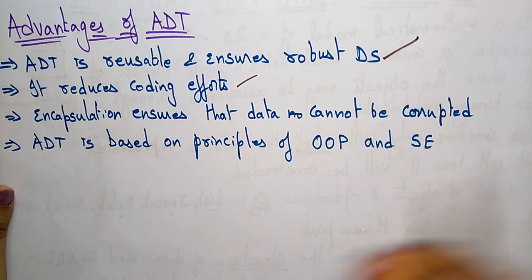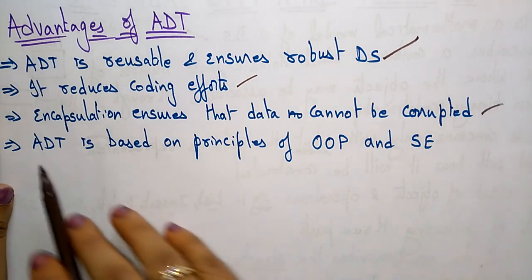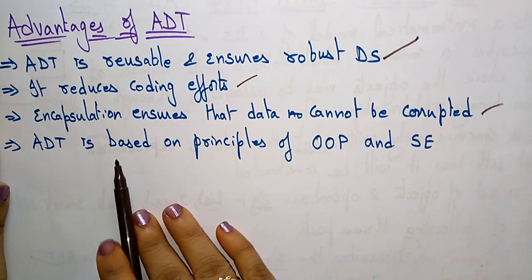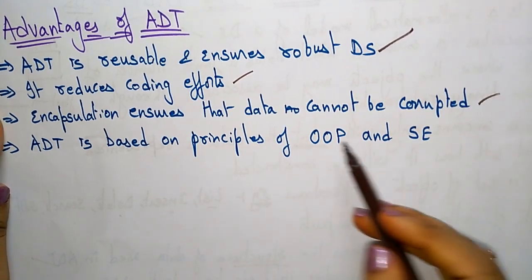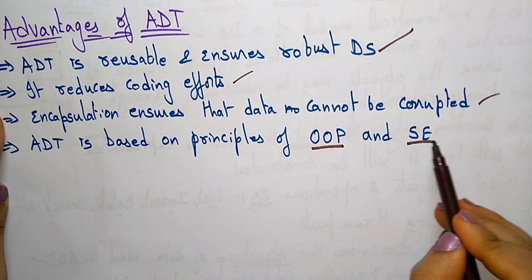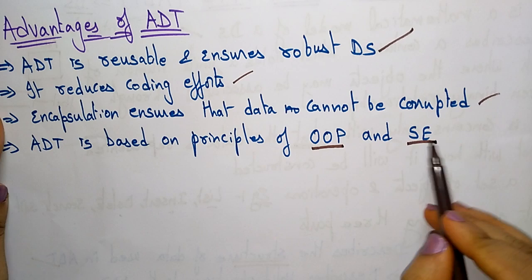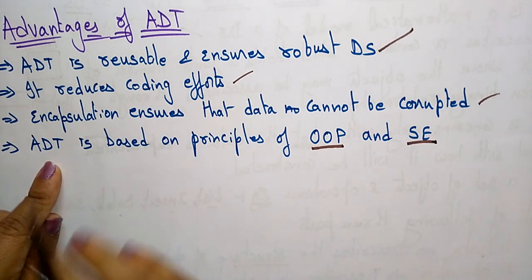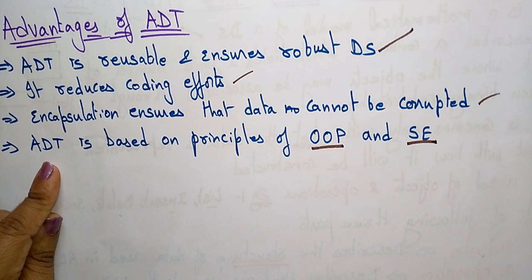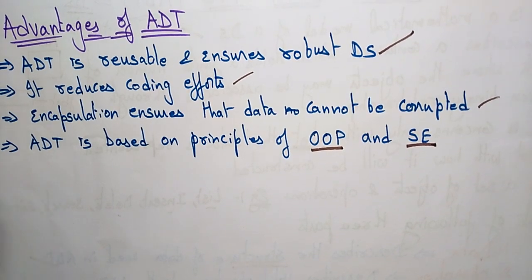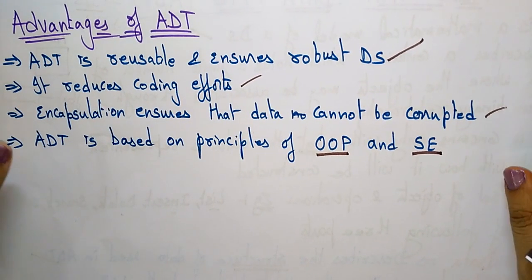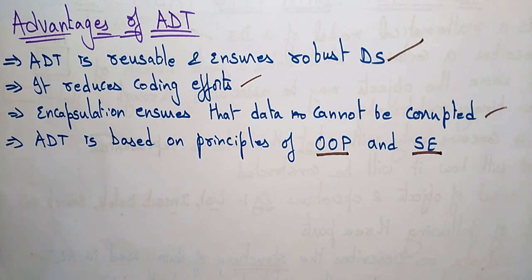Abstract data type is based on the principles of object-oriented programming and software engineering. So this is about the abstract data type. Thank you.